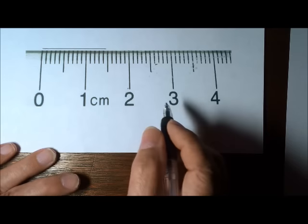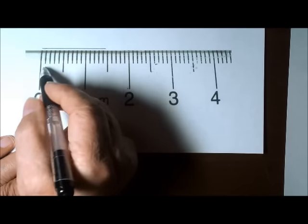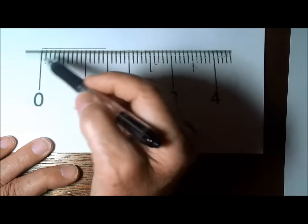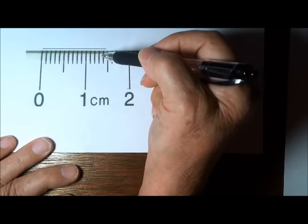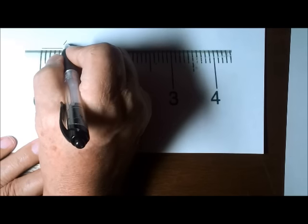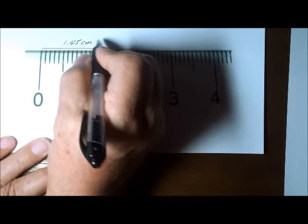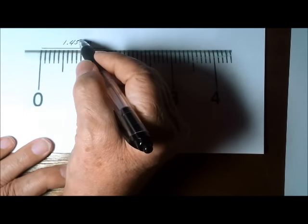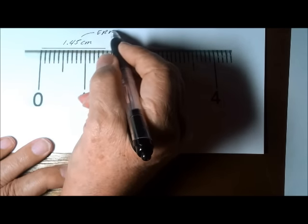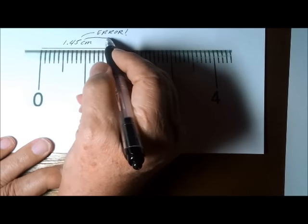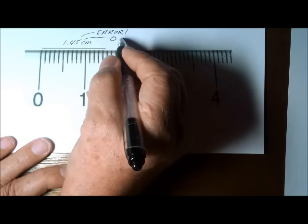All right, let's see if you've got your quiz correct. The measurement of this line is 1.45 centimeters. Remember, the last digit is where the error is. The last digit has to be either a zero or a five.